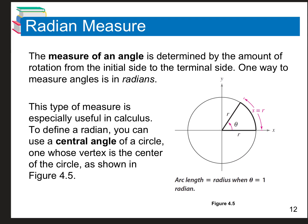The measure of an angle is determined by the amount of rotation from the initial side to the terminal side. There are 360 degrees in one whole circle, 180 in half a circle, and 90 in a quarter circle. Going positively: 90, 180, 270, 360. Going the opposite direction negatively: negative 90, negative 180, negative 270, negative 360. It's just direction.